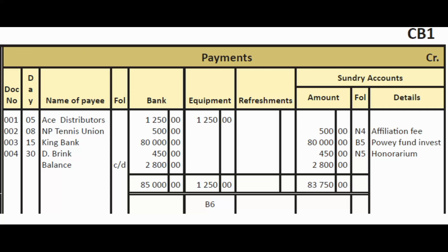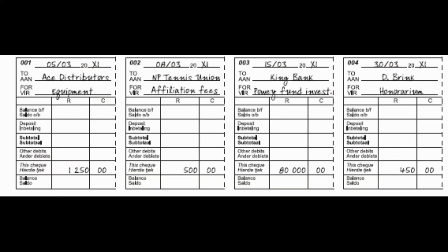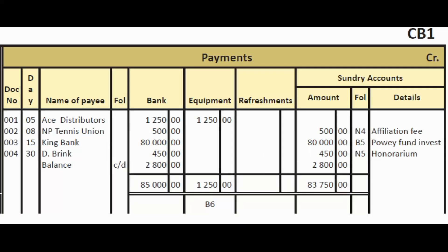The last payment: D Brunk honorarium. We paid $450 to D Brunk — he was probably the treasurer or secretary. Under payments on the credit side of the cash book, write D Brunk, $450 in the bank column, and $450 in the sundry accounts column with the detail 'honorarium.'